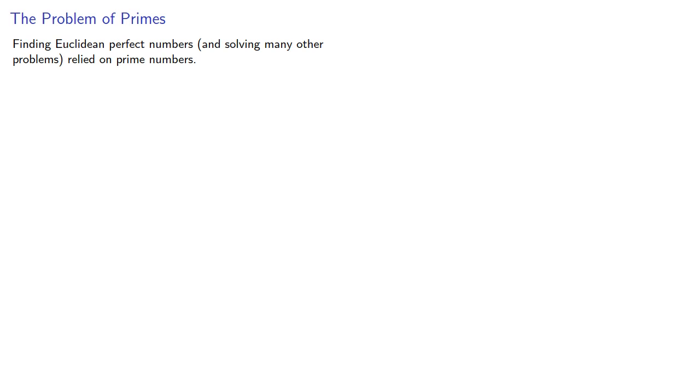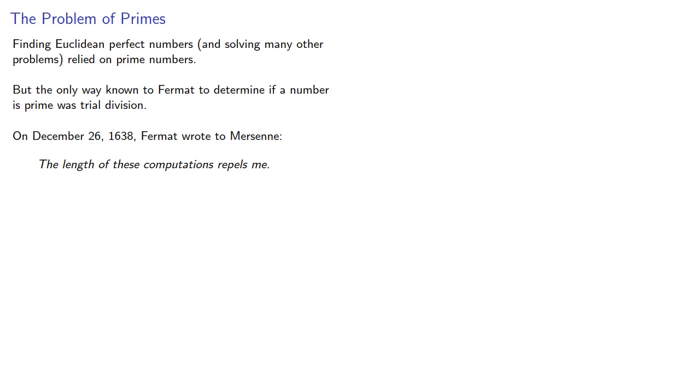Finding Euclidean perfect numbers, and solving many other problems in number theory, relied on prime numbers. But the only way known to Fermat to determine if a number was prime was through trial division. This is a tedious problem. In fact, on December 26, 1638, Fermat wrote to Mersenne: the length of these computations repels me.